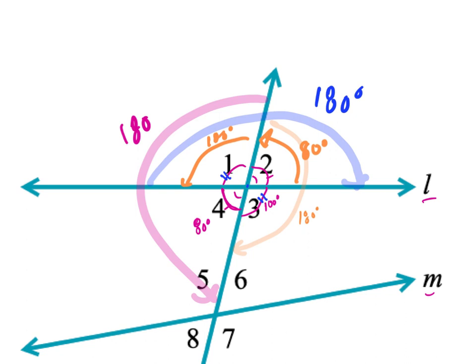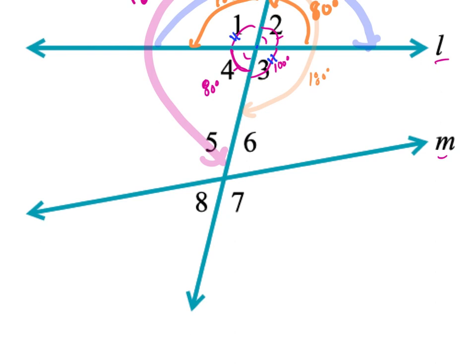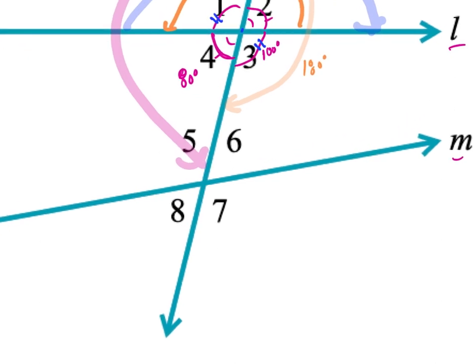So if we look at the next diagram: what is the vertical angle to five, and what is the vertical angle to six? The opposite angle of five is seven, so those two are congruent. The vertical angle to six is eight — two tick marks — so those two angles are congruent.